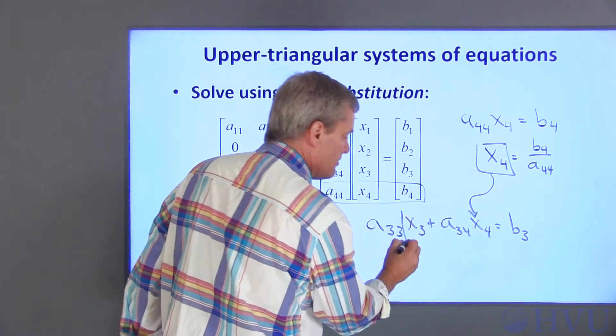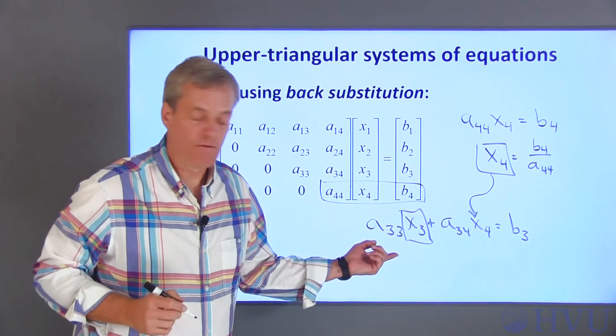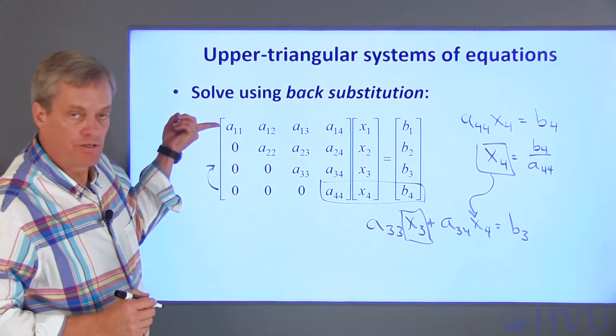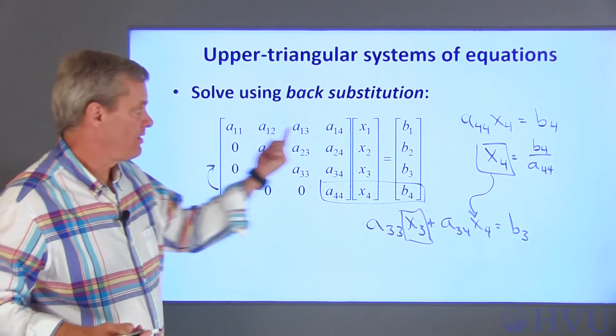This number goes here, and we can very easily solve for X3. We just proceed backwards through the matrix this way to get all of our unknown values.